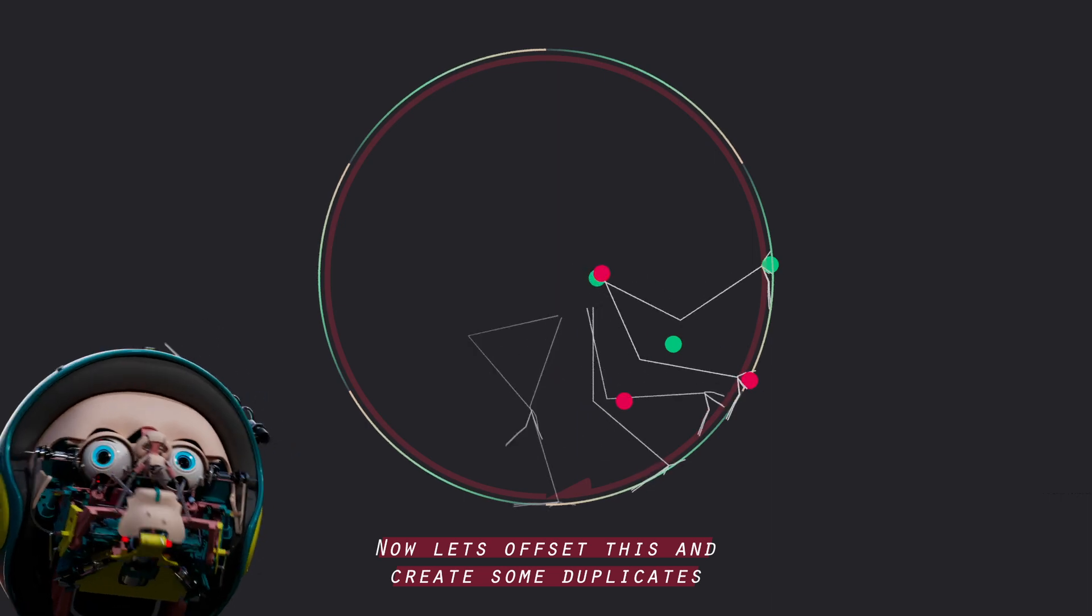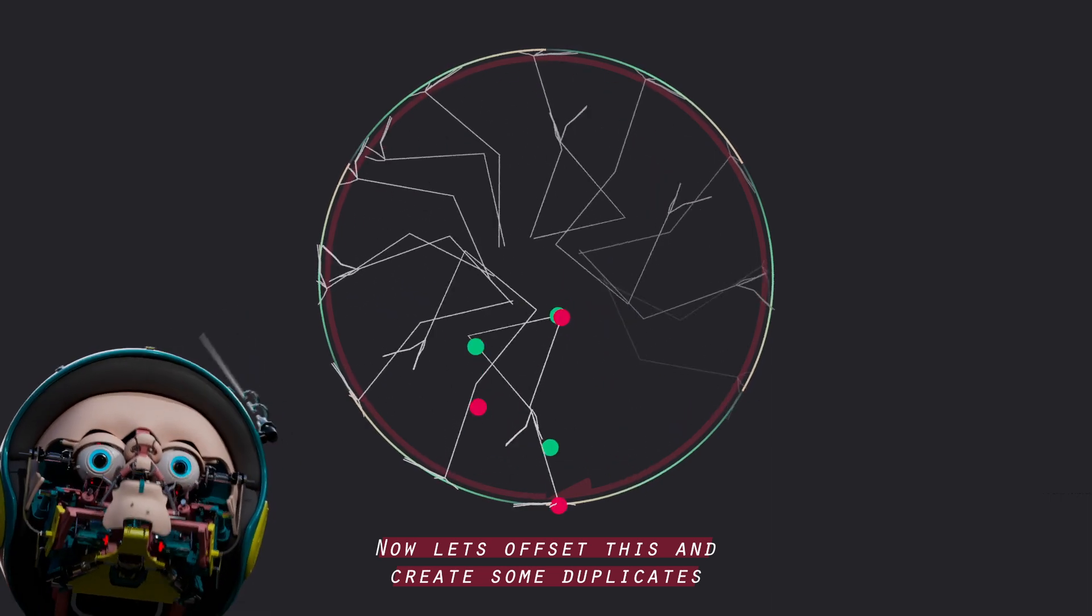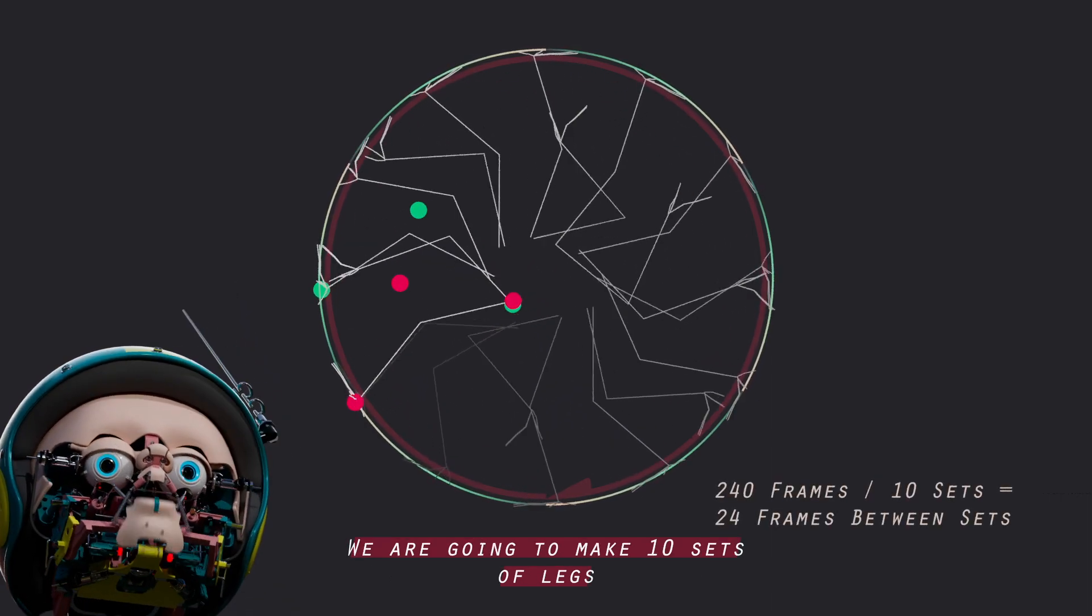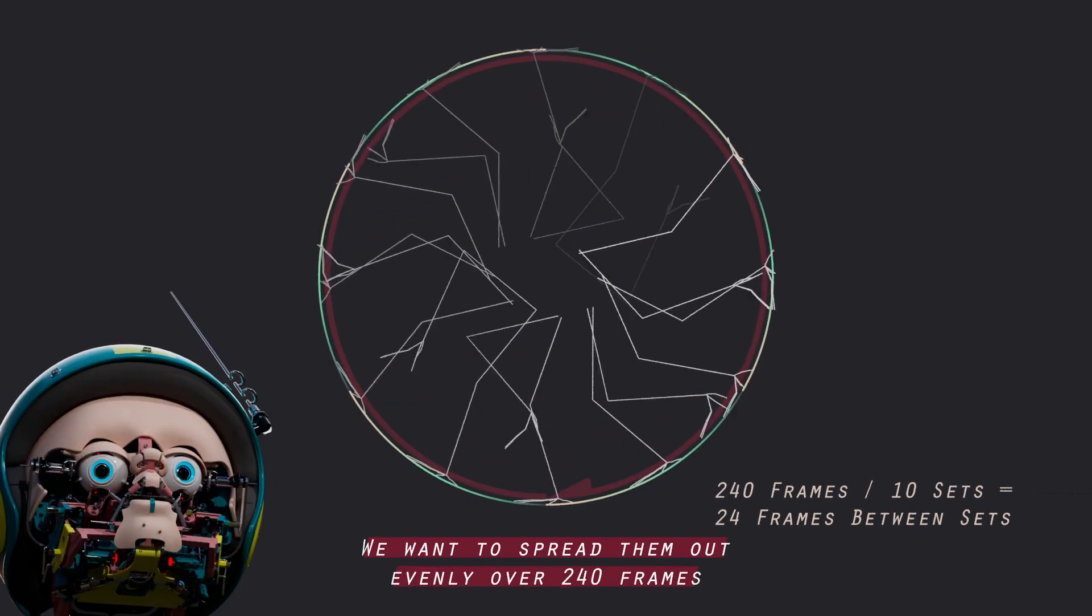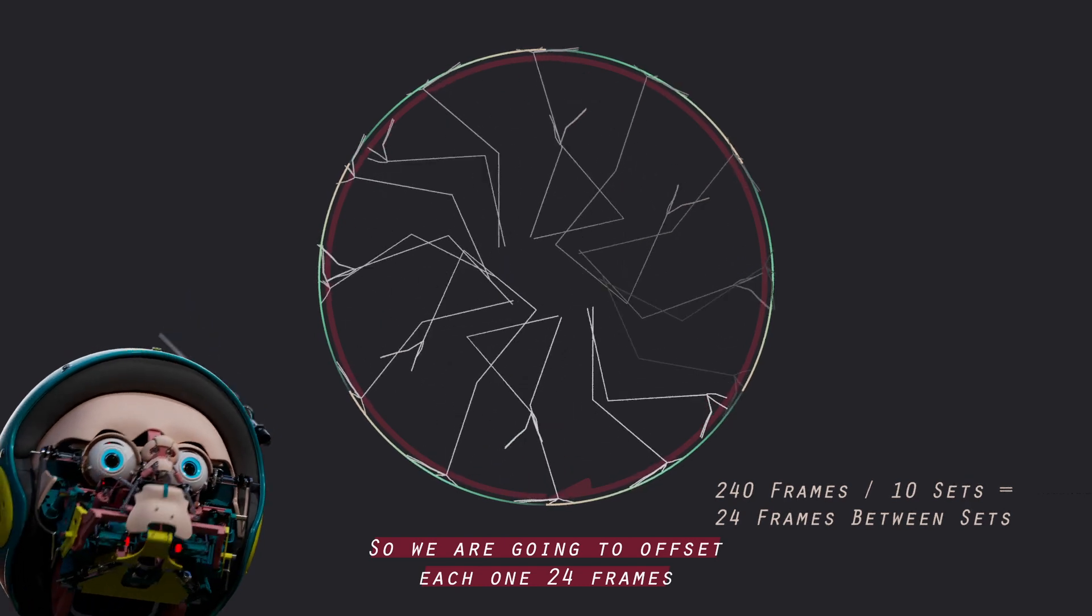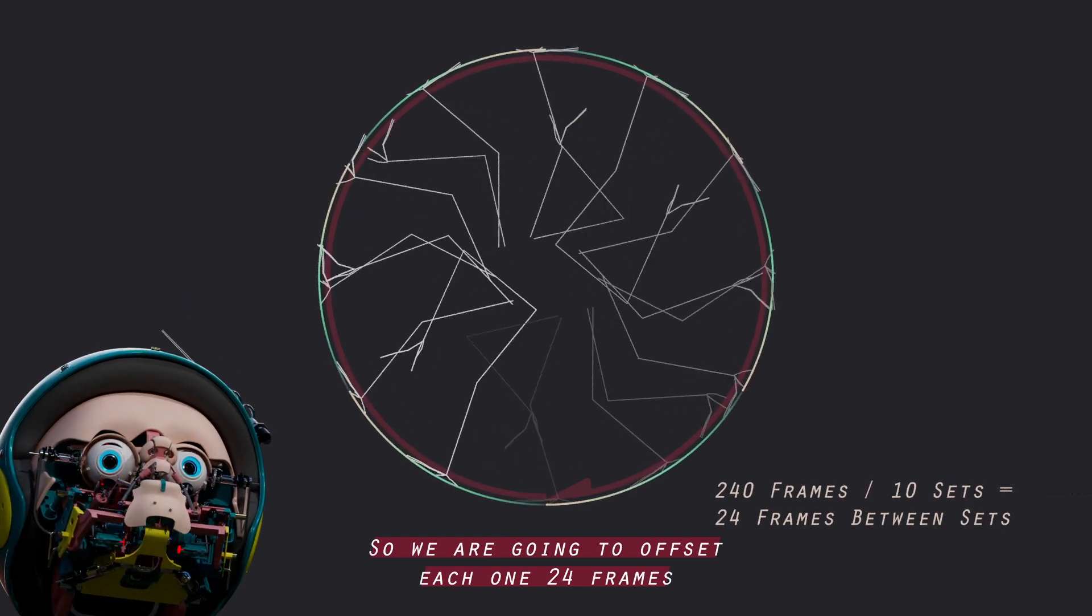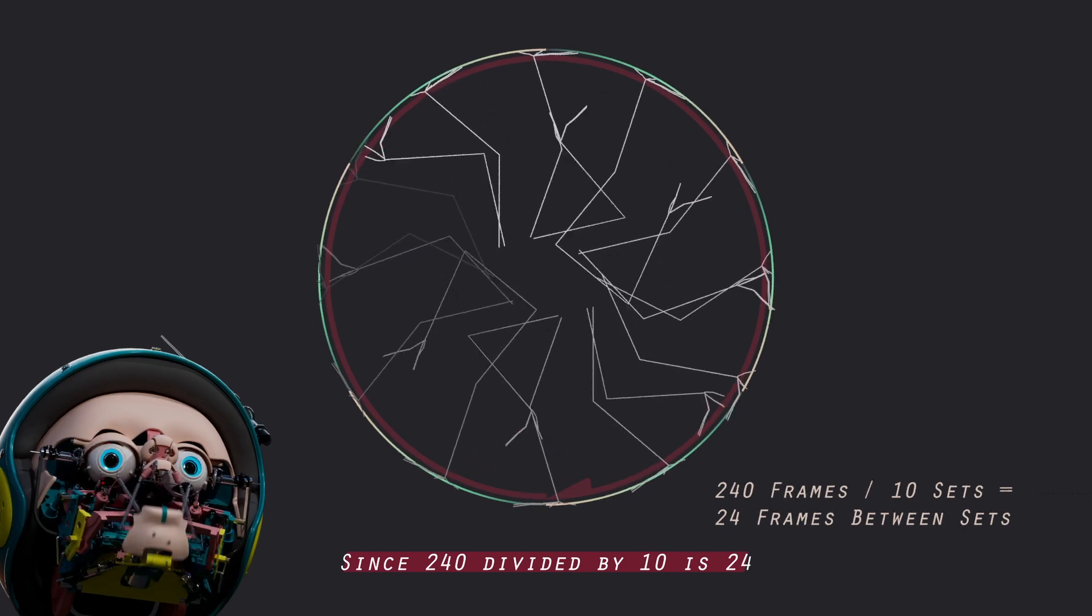Now let's offset this and create some duplicates. We are going to make 10 sets of legs. We want to spread them out evenly over 240 frames, so we are going to offset each one 24 frames, since 240 divided by 10 is 24.